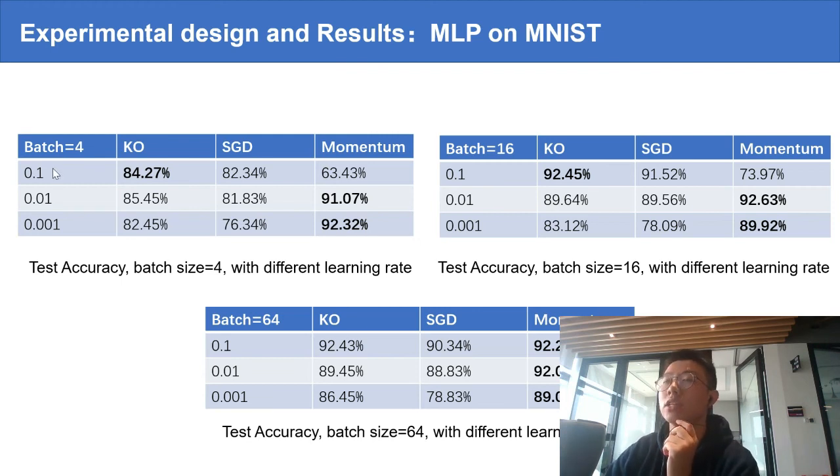But for large learning rate and small batch size, the momentum method has difficulty in convergence and achieves quite low performance. But the Kalman Optimizer is very robust to those hyperparameter selections.